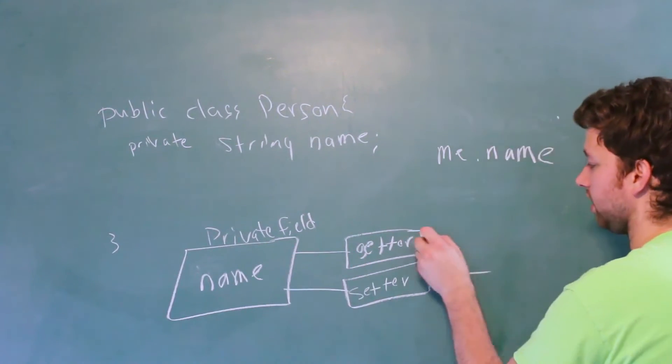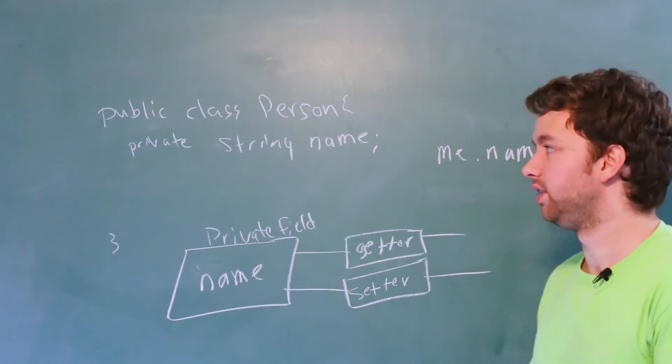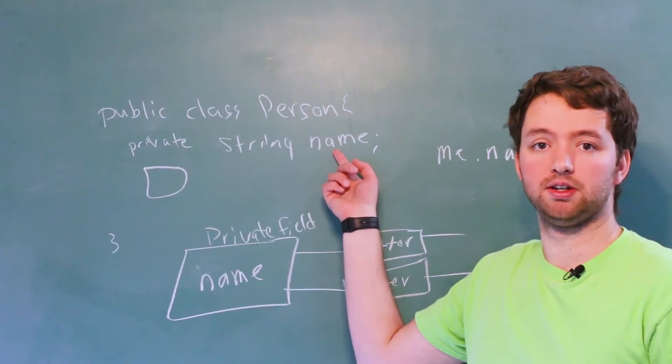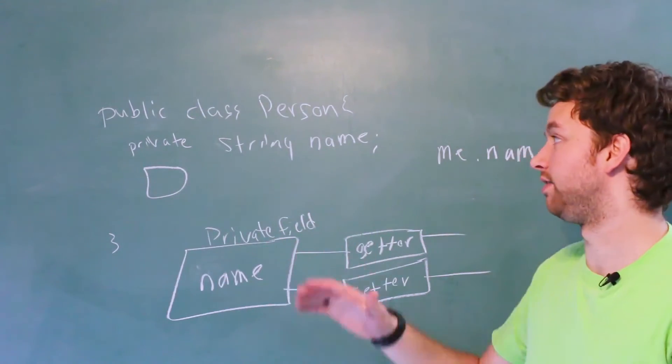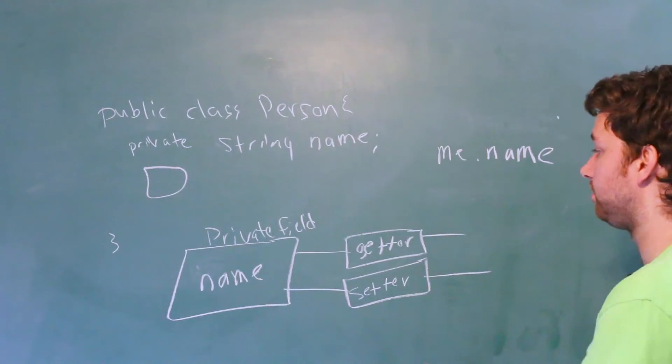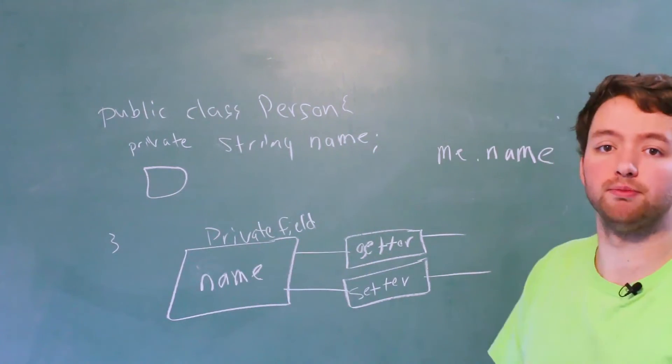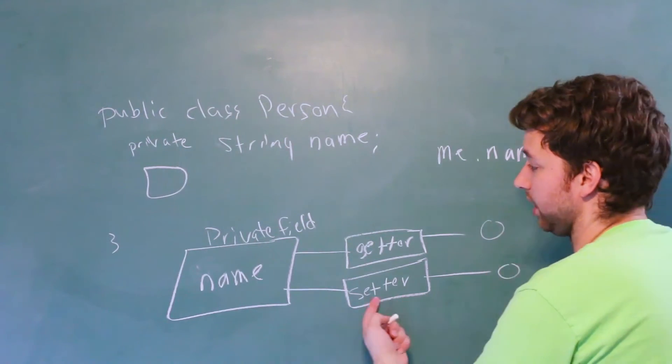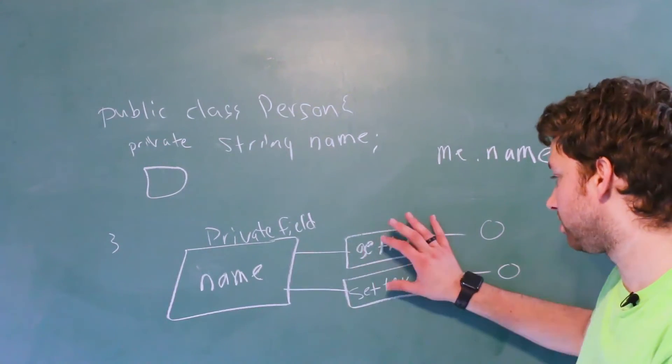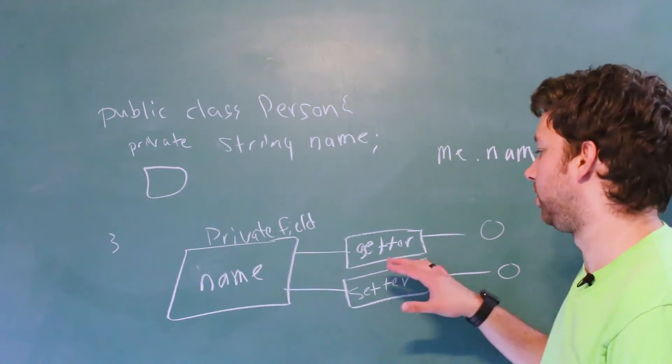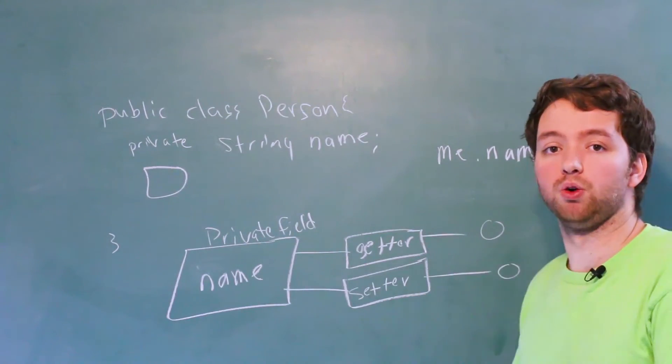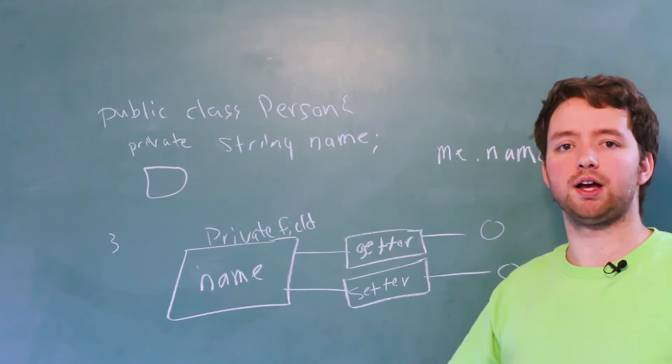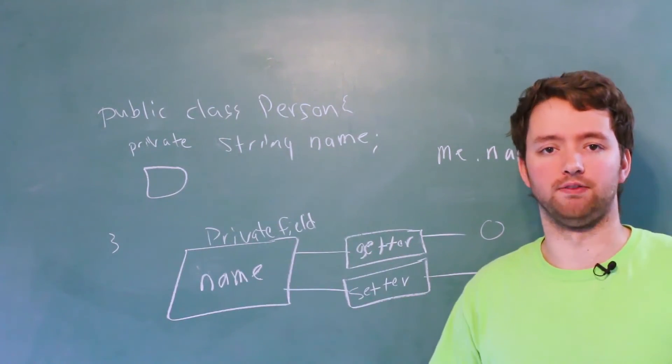And what these do is basically gate access to this private field because these are going to be defined up here. They can access this name and they can basically control how much access you get to this private field here. So we have a getter method, which will allow us to get the information. Then we have a setter method where we can pass in information to change that field. And we can customize these to do different things. Maybe we can only get it a certain way or we can only set it to certain values. That is one example of what you might use private fields for. It allows us to have more structure and more control inside of our class.